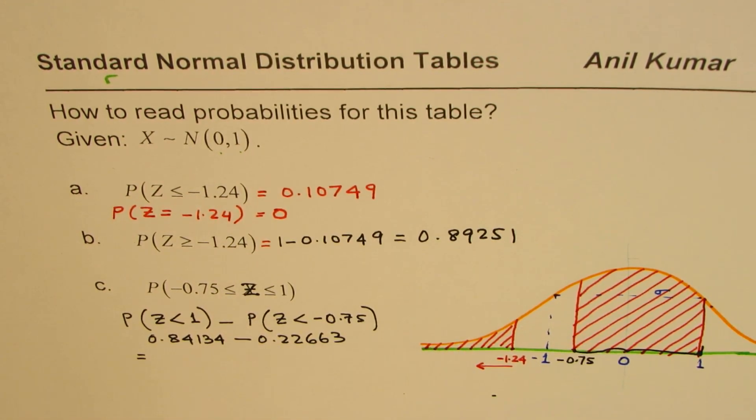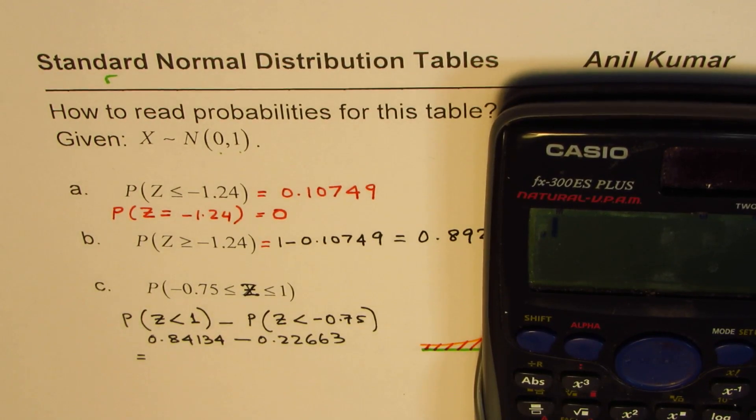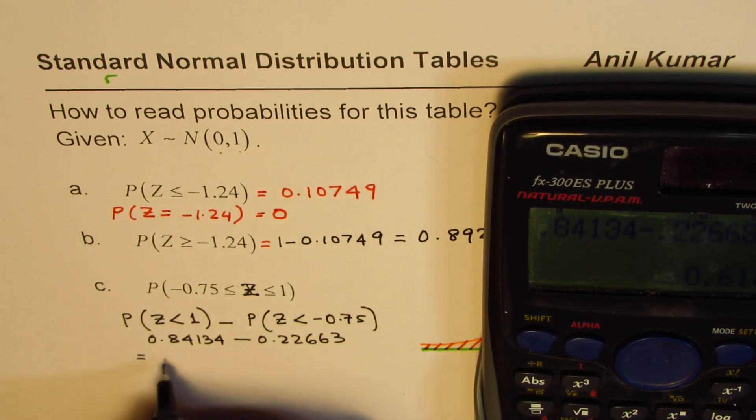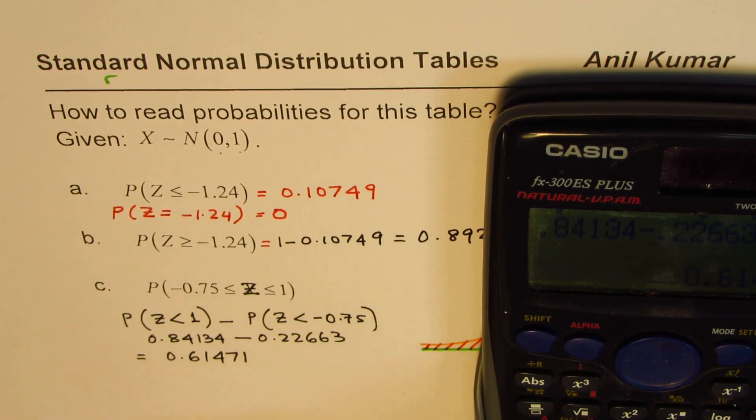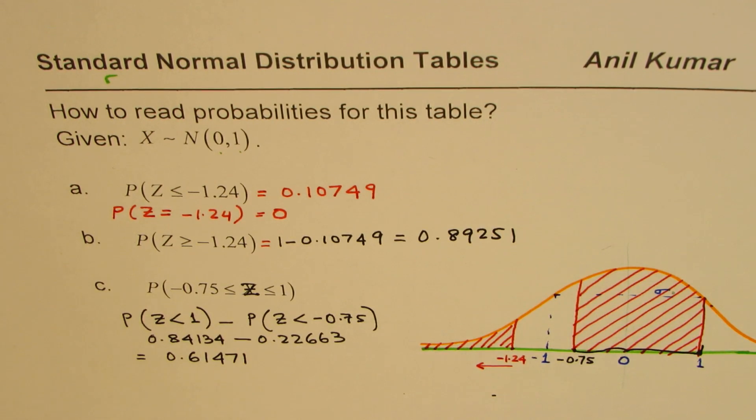So let's use the calculator once again. It says 0.84134 take away 0.22663 equals to, so we get 0.61471. So that is what we get.